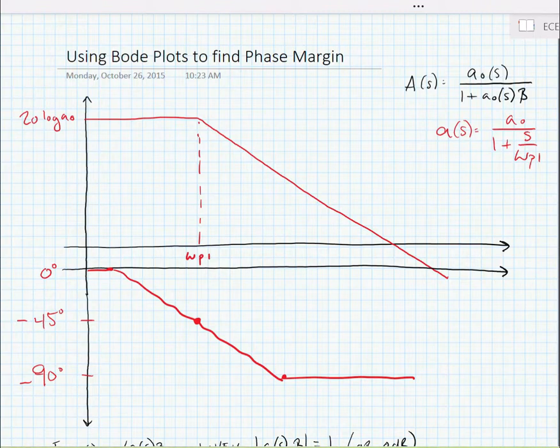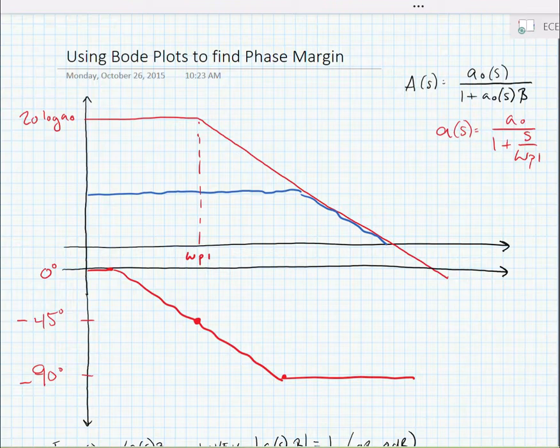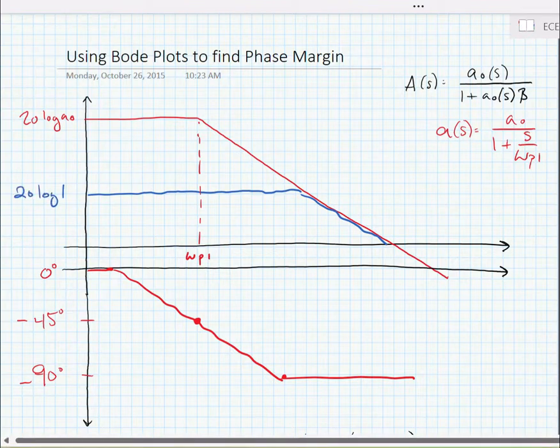Now if we configure this as a closed loop system, we would assume that we would have a closed loop gain. It's represented by this blue curve that I'm drawing now. It would have a magnitude of 20 log a sub 0, a closed loop gain.